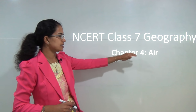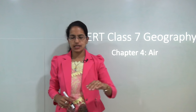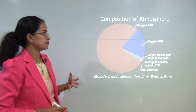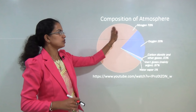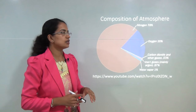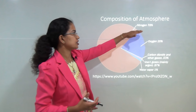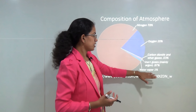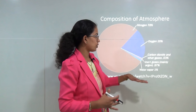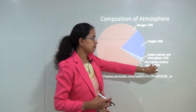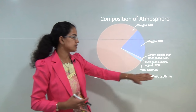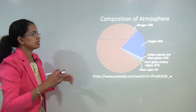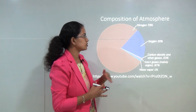Welcome. We will start with NCRT Class 7 Geography Chapter 4, that is Air. We will start with the composition of air. Most of the atmosphere constitutes nitrogen, followed by oxygen. Nearly 1% is water vapor, then predominantly argon, which is an inert gas, and finally carbon dioxide. Now let us understand the importance of these gases in the atmosphere.